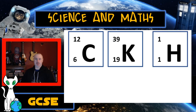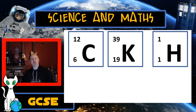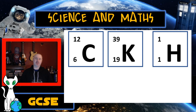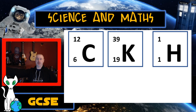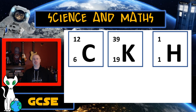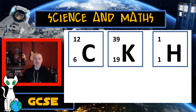If I take the mass number and measure out that many grams, I say I've measured out one mole of carbon. I can do it with other elements too. Potassium has a mass number of 39, so 39 grams of potassium is one mole. Hydrogen has a mass number of 1, so one gram of hydrogen is one mole. Easy.